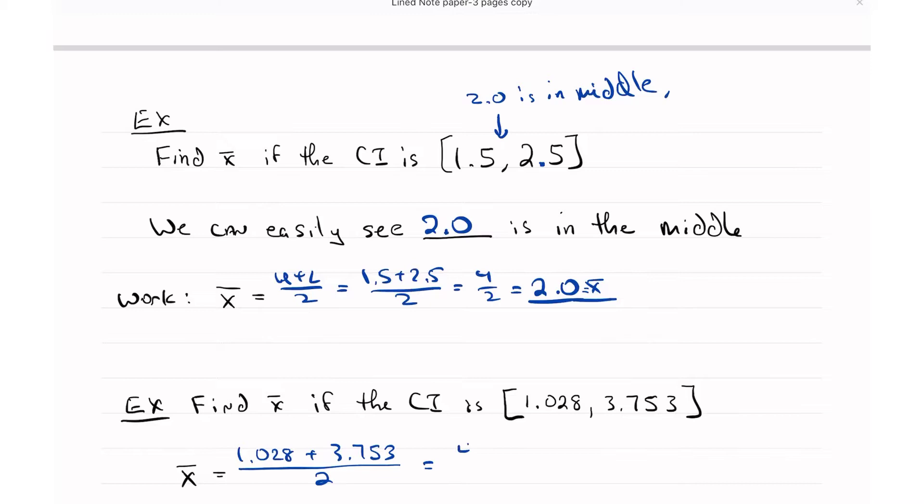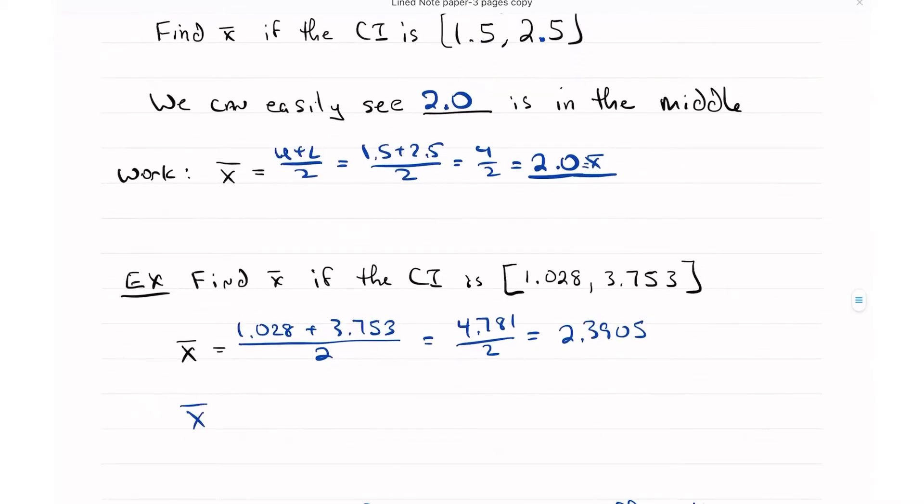Which gives me 4.781 divided by 2, which is 2.3905. So X bar is equal to 2.3905.